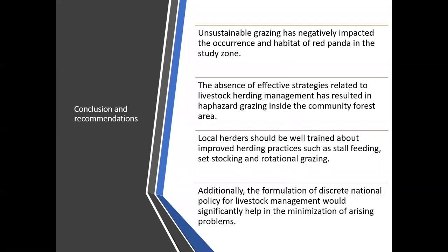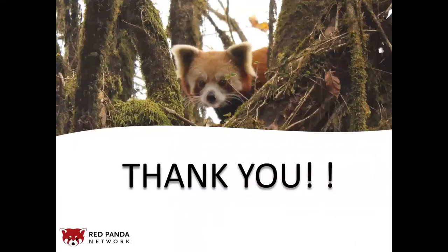To sum up, unsustainable grazing has negatively affected the occurrence and habitat of red panda. The lack of effective strategies has led to haphazard grazing. Local farmers should be well trained about sustainable herding practices. Moreover, the formulation of a discrete national policy for livestock management will help in minimizing the arising problems. Thank you.